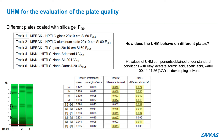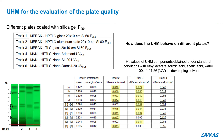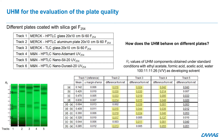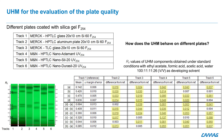With different plates from Macherey-Nagel, for example the Nano-Adamant, the Nano-SIL or the Nano-DURASIL, all plates give different RF values for most of the UHM zones.